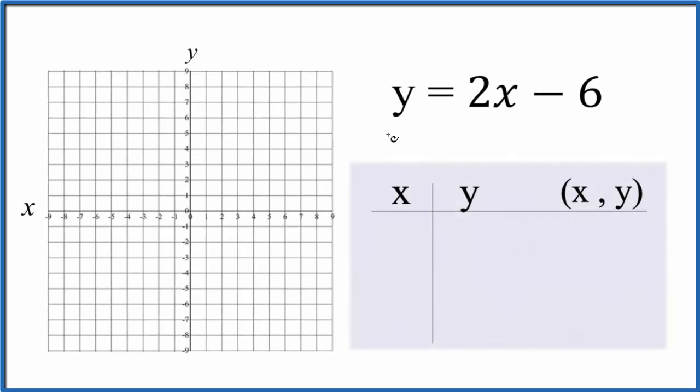Let's graph the linear equation y equals 2x minus 6 and we'll do this two ways. We're going to use a table of values here and then we'll check our work with slope-intercept formula.